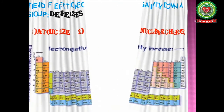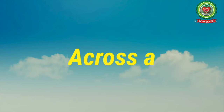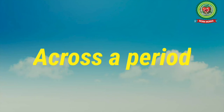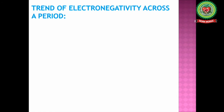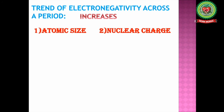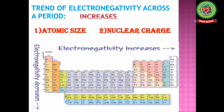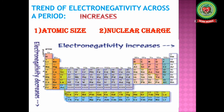Now, coming to the value of electronegativity as we move across a period: while moving across a period from left to right, the value of electronegativity increases. It again depends upon two factors — atomic size and nuclear charge. Since the nuclear charge increases due to an increase in atomic number, electronegativity increases from left to right.